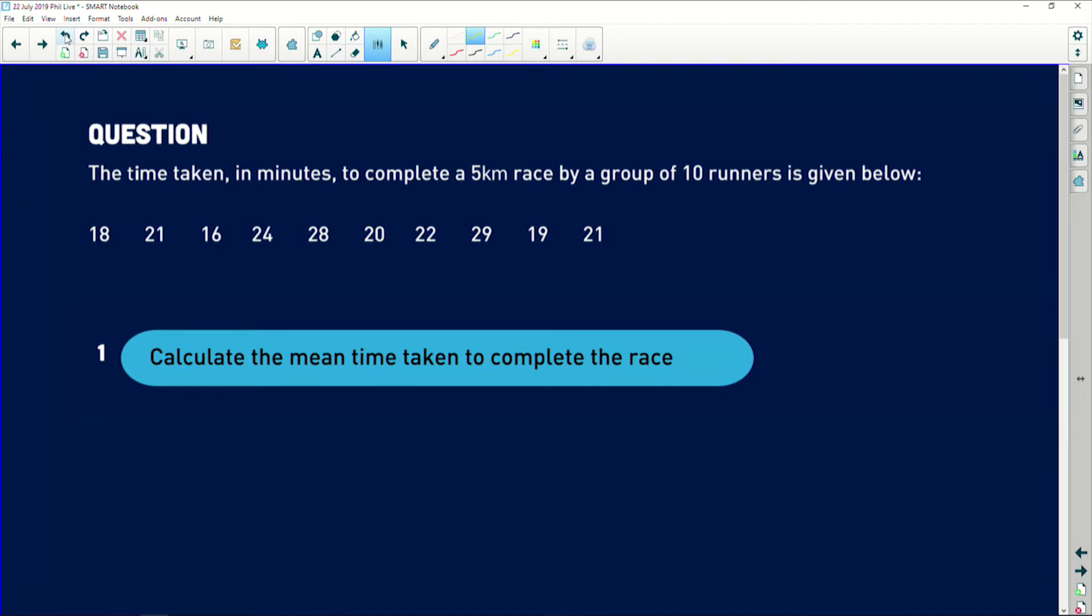It says the time taken in minutes to complete a 5km race by a group of 10 runners is given below. So obviously there are 10 sets of data here, or 10 examples, and this is how long each of those 10 runners took to write the 5k.